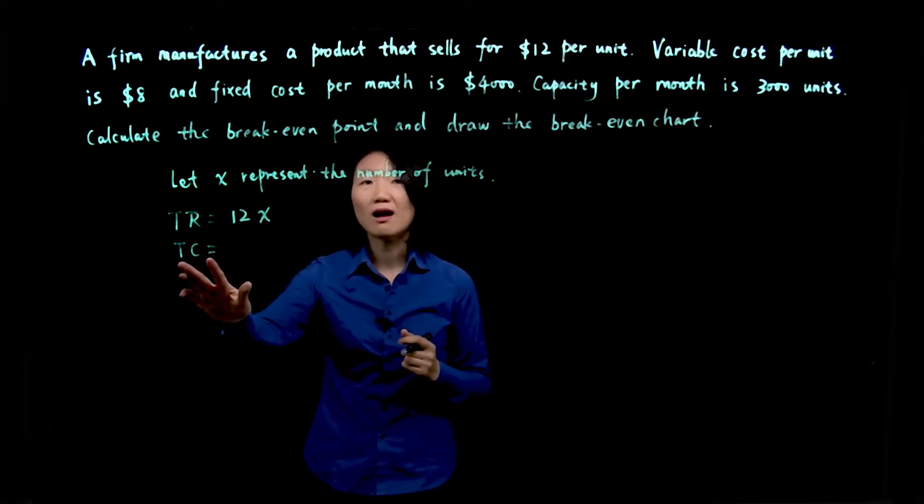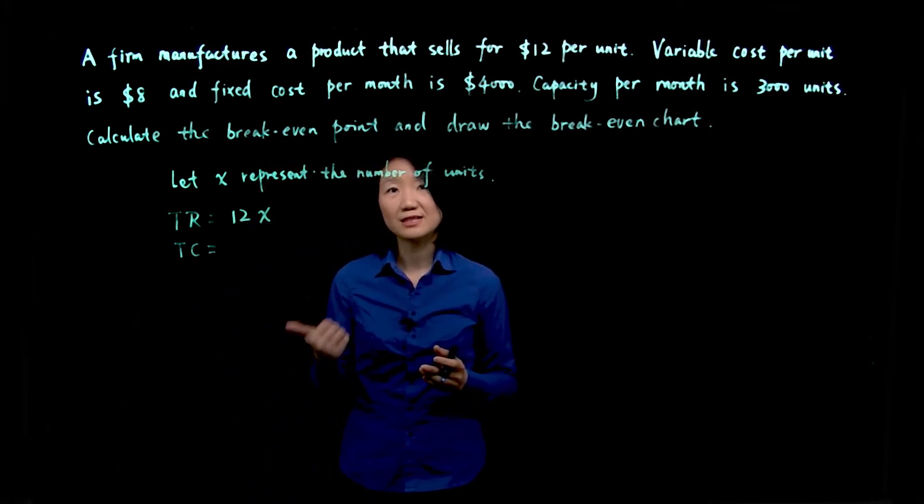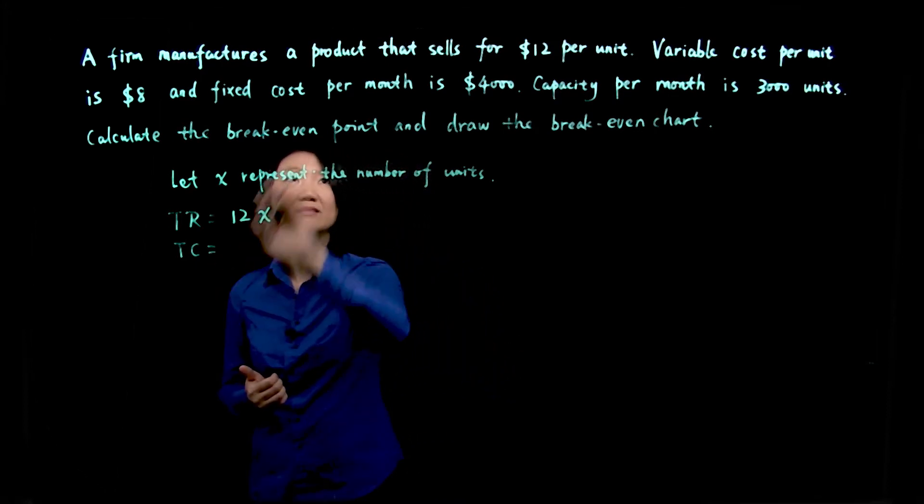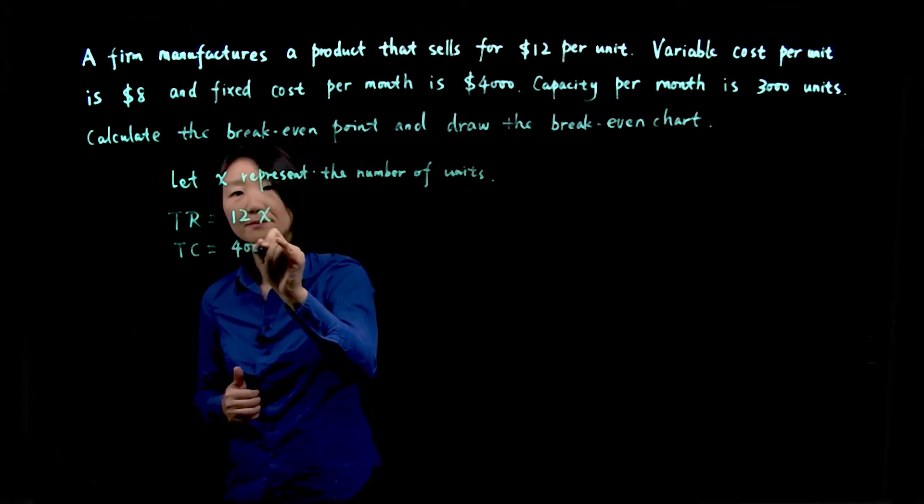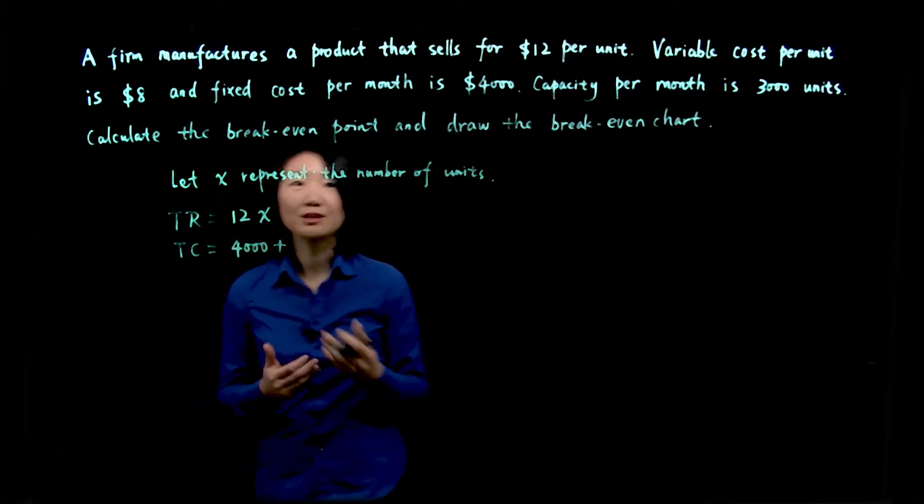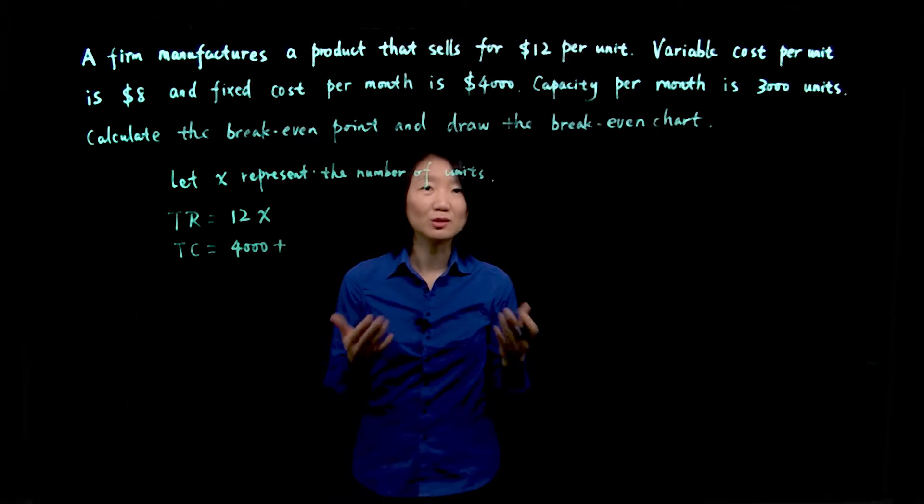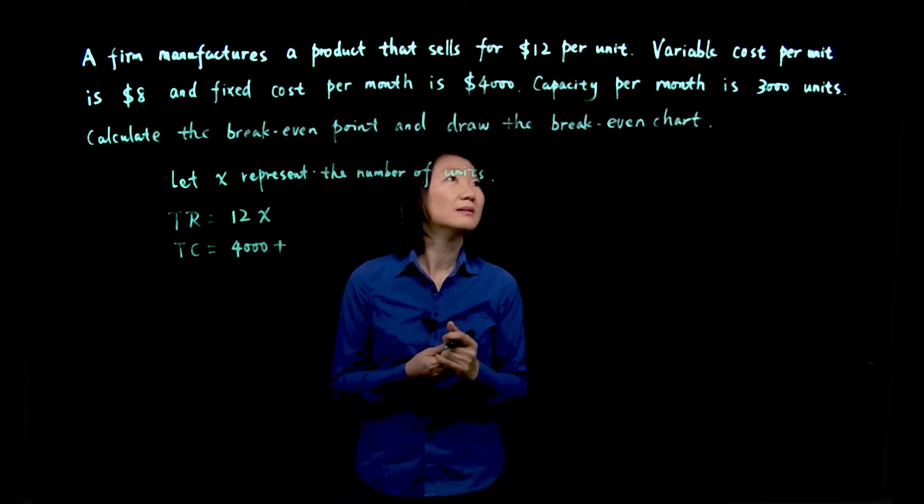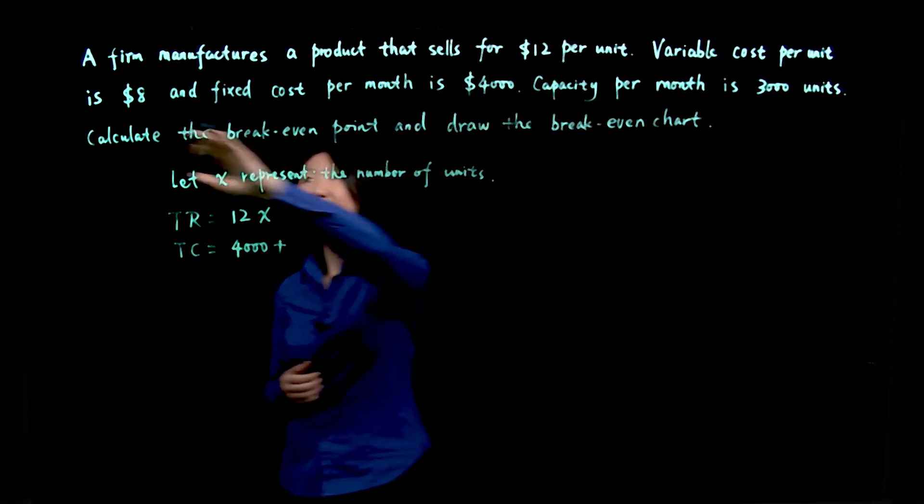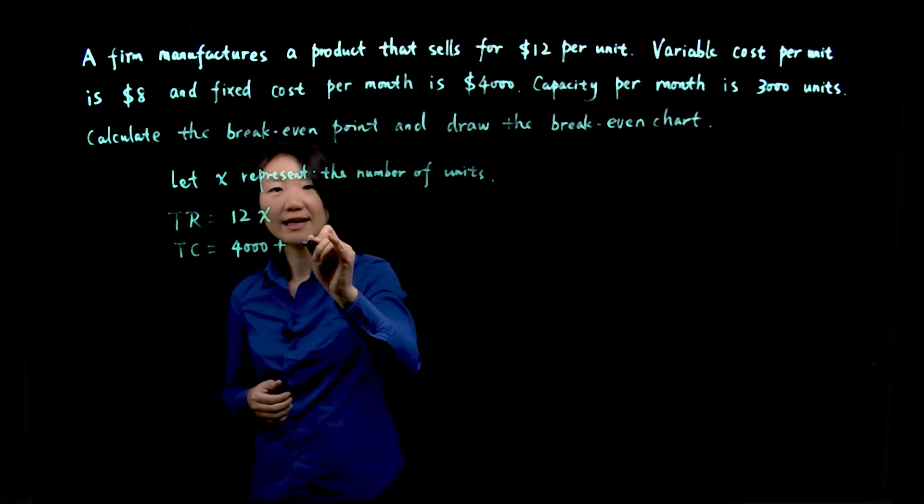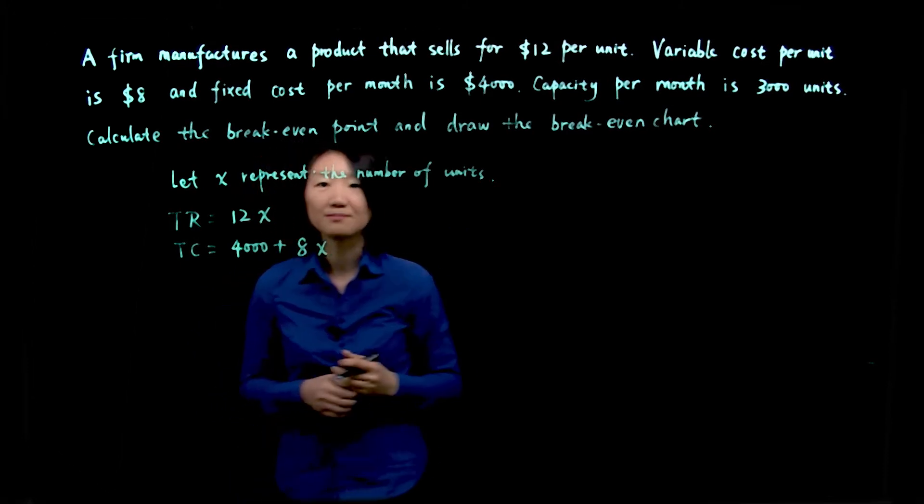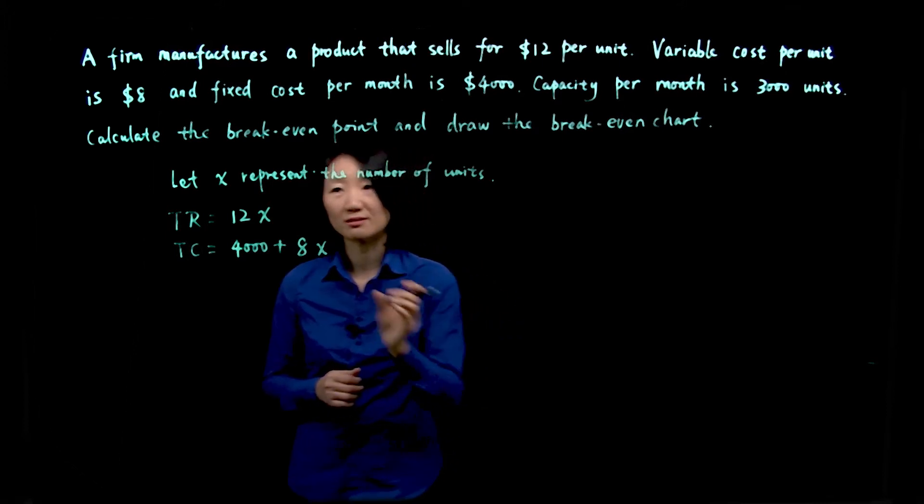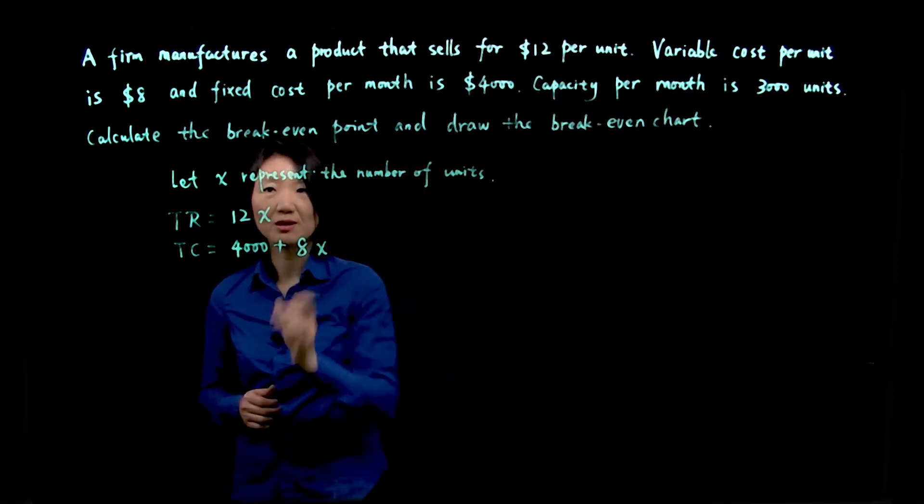Total cost has two components, fixed cost and variable cost. The fixed cost given per month is $4,000. And the variable cost depends on how many units you produce. So the variable cost per unit is $8. $8 per unit times number of units produced. So that's the total variable cost, fixed cost and variable cost.